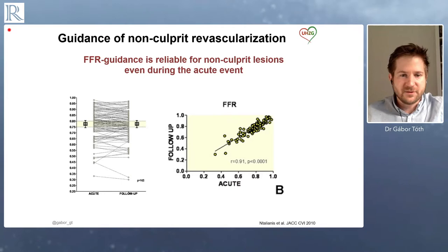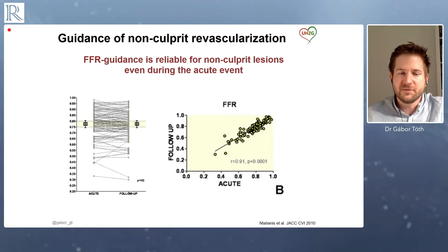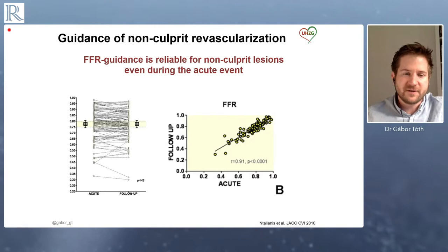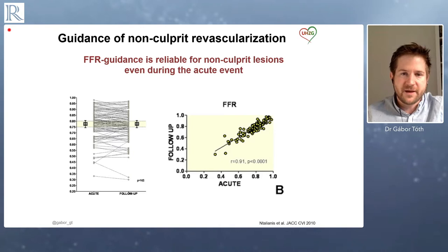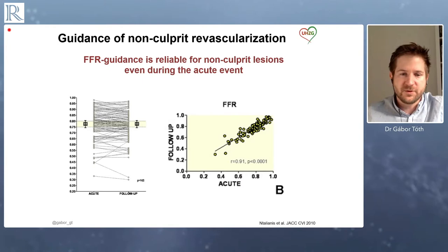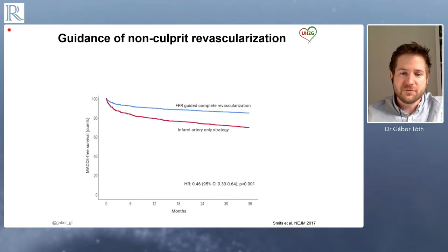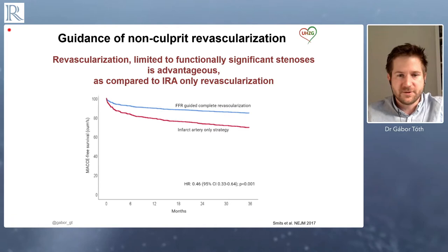I'd like to refer to a study from more than 10 years ago from the IELTS group, showing that FFR guidance is actually reliable for the non-culprit lesions even during the acute event. There was always discussion about whether FFR guidance is reliable — vessels might be spastic, you cannot reach maximum hyperemia. But this study showed very nicely that the FFR measured in the acute setting is actually the same value as what you can measure later on in the non-culprit lesions. FFR for the non-culprit is a reliable measurement, even during the acute setting. And this was confirmed on a larger scale, showing that FFR-guided revascularization of the non-culprit is advantageous compared to infarct-related revascularization alone.